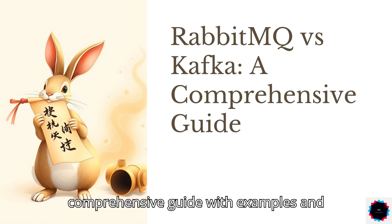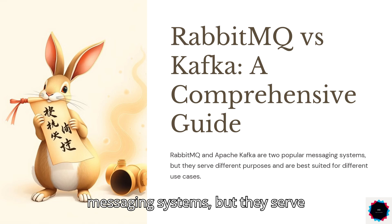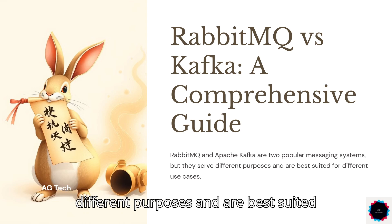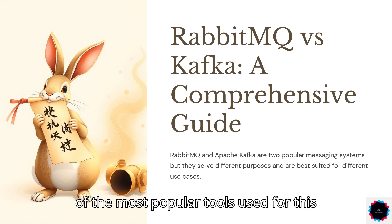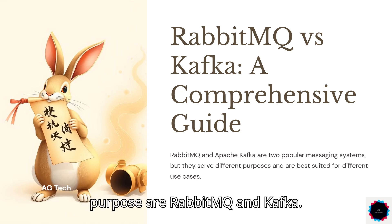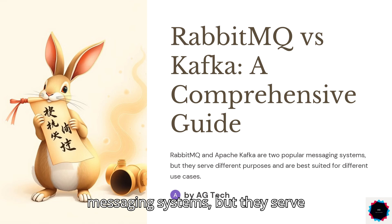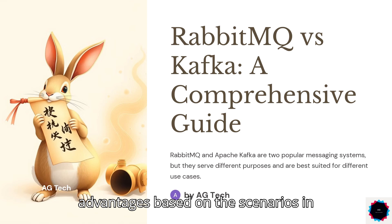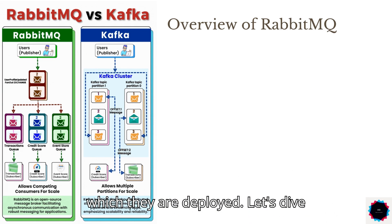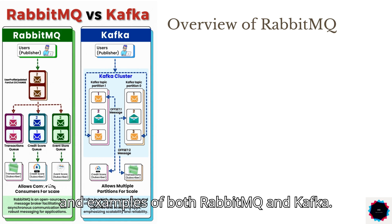RabbitMQ vs. Kafka – A Comprehensive Guide with Examples and Detailed Comparison. RabbitMQ and Apache Kafka are two popular messaging systems, but they serve different purposes and are best suited for different use cases. Both are open-source distributed messaging systems that offer different advantages based on the scenarios in which they are deployed.